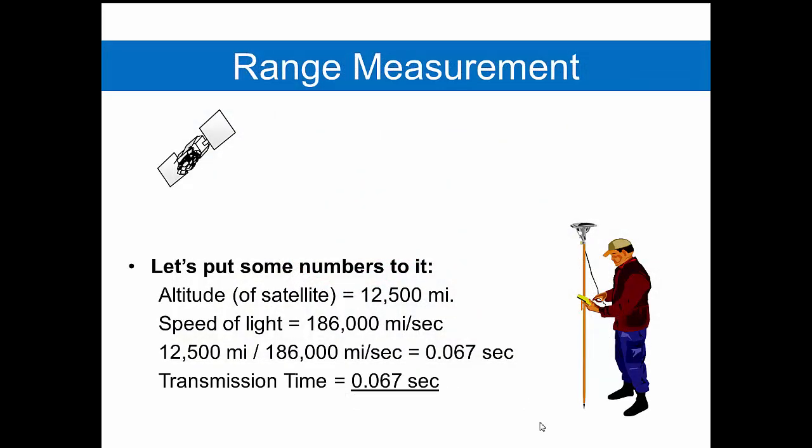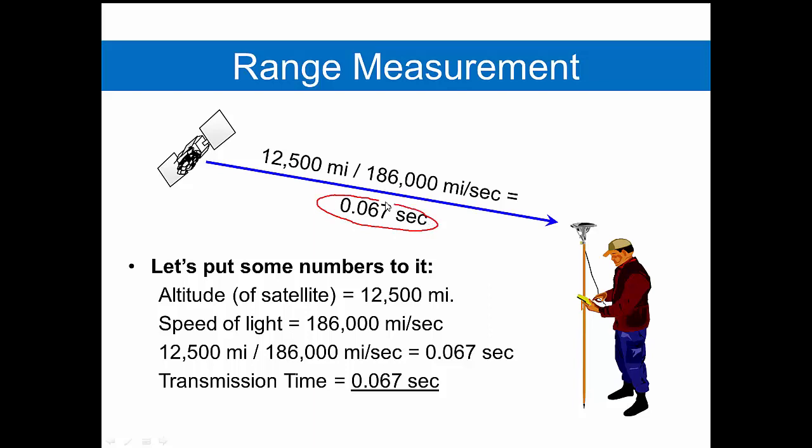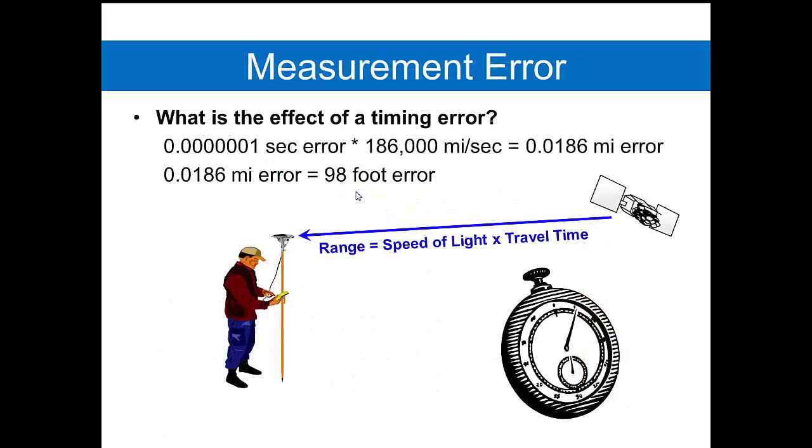Consider how far away that is at 12 and a half thousand miles. How long does it take to get there? Well, 12 and a half thousand miles divided by the speed of light, in terms of miles per second, will give us a result of somewhere around seven hundredths of a second. That's a pretty small fraction. And if we don't measure that time very well, we can have a great deal of error.